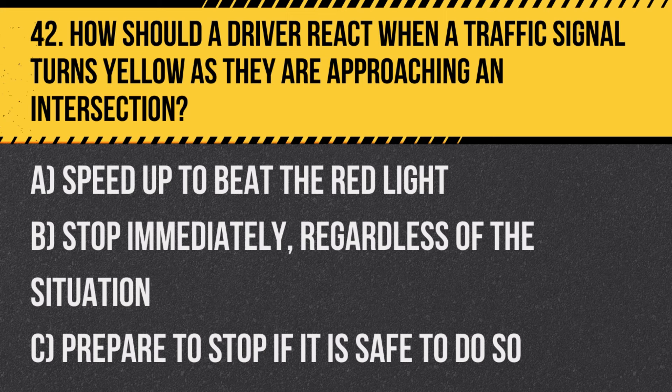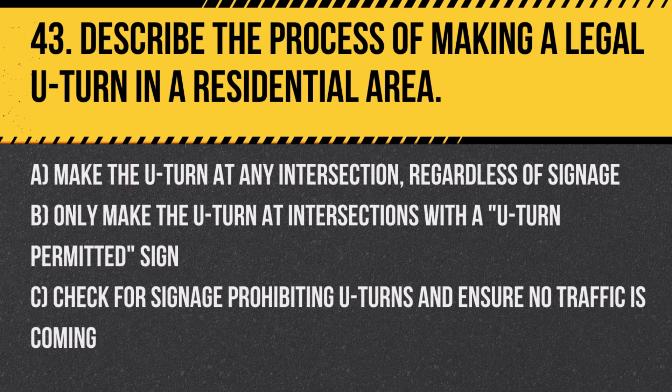Question 42: How should a driver react when a traffic signal turns yellow as they are approaching an intersection? A. Speed up to beat the red light. B. Stop immediately, regardless of the situation. C. Prepare to stop if it is safe to do so. Answer: C. Prepare to stop if it is safe to do so. The yellow light is a warning that the signal is about to change to red, and if safe, the driver should stop.